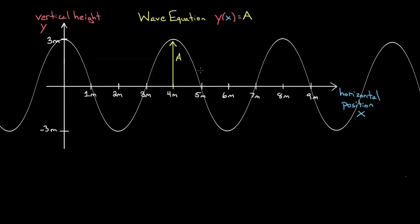Look at the shape of this — it's like a sine or a cosine graph. Because at x equals zero it starts at a maximum, I'm gonna say this is most like a cosine graph, because cosine of zero starts at a maximum value. Now you might be tempted to just write x inside the cosine, but that's not gonna work. If I just wrote x, cosine of x will reset every time x gets to two pi. But this cosine resets after four meters, and some other wave might reset after eight meters. I need a way to specify how far you have to travel in the x direction for the wave to reset.